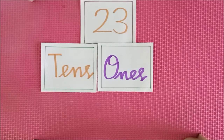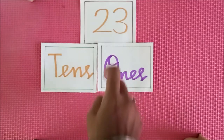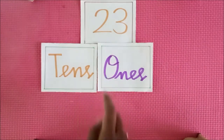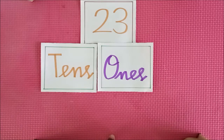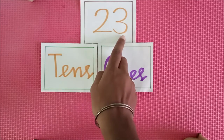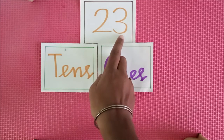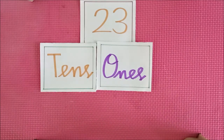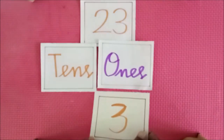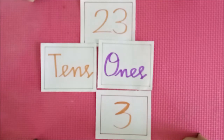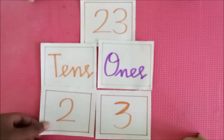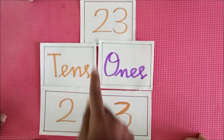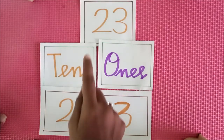Now it is time for our activity. See here — what number are you seeing? 23. How many 10s and 1s are there in 23? The first place is 1s and the second place is 10s. So we keep 3 in the 1s place and 2 in the 10s place. In 23, there are 3 ones and 2 tens.